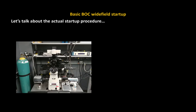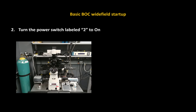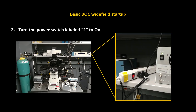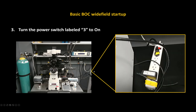Let's talk about the actual startup procedure. The first thing you're going to want to do is turn the power switch that has a yellow piece of tape labeled one to on, and that's located right here. The second step is to turn the power switch labeled two to on, which is located just out of shot. The third step is to turn another power switch just to the right of this large white box, labeled three. That completes all the power switches you have to turn on.